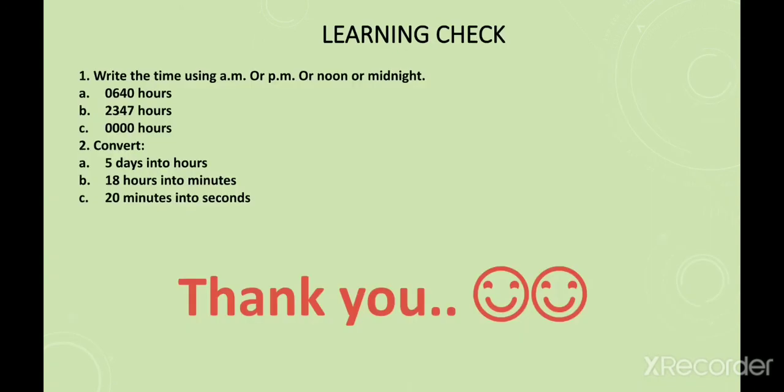Here are some learning check questions. Write the time using AM or PM or noon or midnight. Convert 0540 hours, 2347 hours, and 0000 hours. Next, convert days into hours: 5 days into hours. First find how many hours are in one day, then find how many hours in 5 days. Same for 18 hours into minutes and 20 minutes into seconds. Thank you students. I hope everything is clear. Good luck.